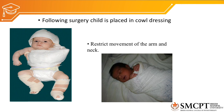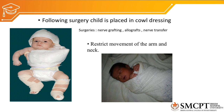Following surgery, the child is placed in a cowl dressing, which restricts movement of the arm and neck. The caregiver should be educated on how the child should be positioned and dressed after surgery or after diagnosis of obstetric brachial plexus injury. Main surgeries performed include nerve grafting, allografts, and nerve transfer. Restricting arm and neck movement prevents further stretch to the brachial plexus.